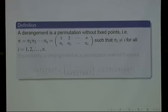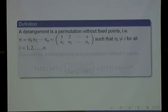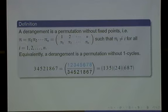Let me introduce the management. I think most of you know what the management is. The management is a foundation with a text point. For example, we have one-line notation right here, and we can write the permutation in two-line notation. We also can write the permutation as a cycle notation. If we write the cycle notation, then a derangement is a permutation without one cycle — no fixed point.